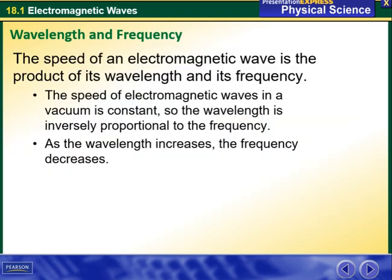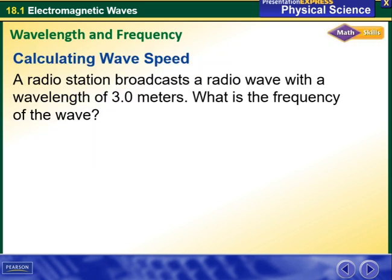The speed of electromagnetic waves in a vacuum is constant, so the wavelength is inversely proportional to the frequency. As the wavelength increases, the frequency decreases. Now we are going to move to calculating wave speed.